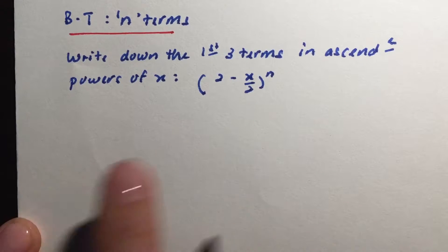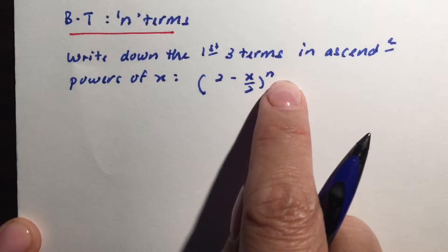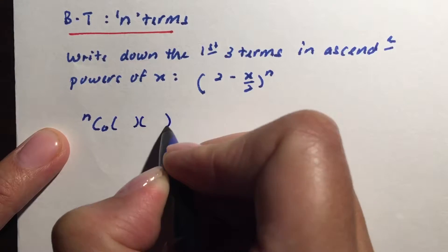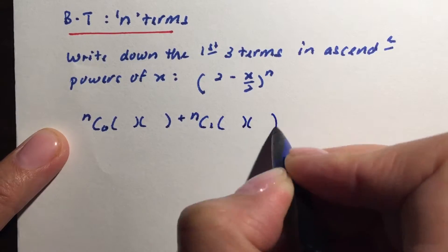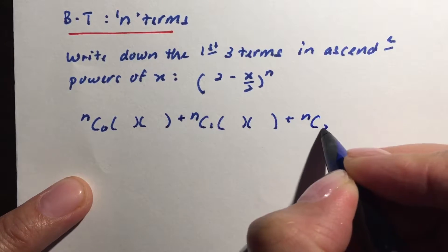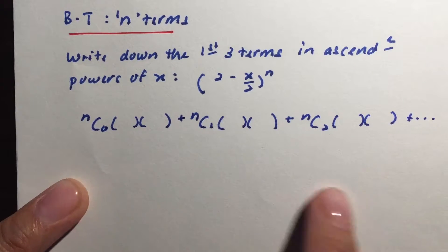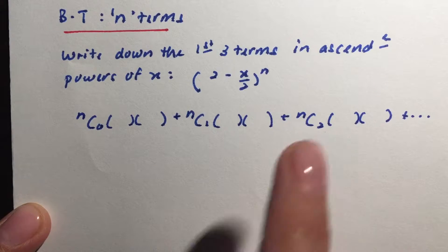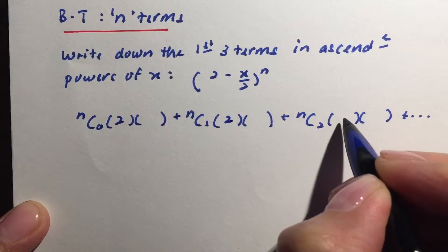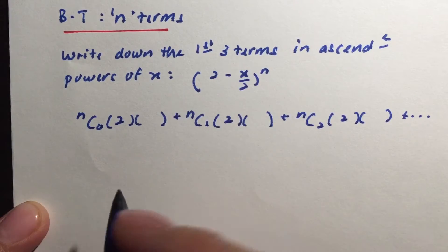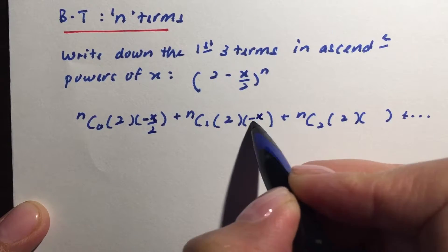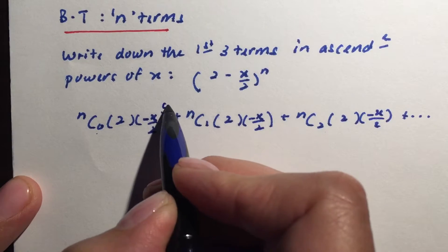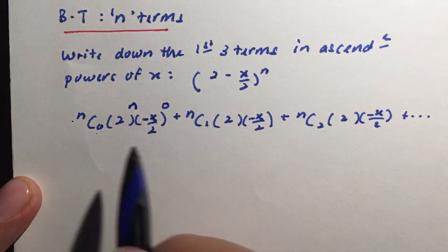We start as per normal. Since the power is n, we begin with nC0, nC1, and nC2 — those give us three terms. The first term uses 2 from the first bracket, and the second term is negative x over 2.